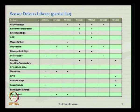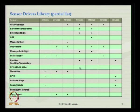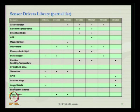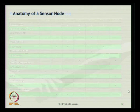Looking at the sensor driver libraries, a partial list is shown for different configurations of the mote, as MTS 101, 300, and 310, as available in the market from Crossbow USA. Most of these models have accelerometers built in, barometric pressure and temperature sensors, broadband light sensors, GPS receivers, magnetic field indicators, microphones present in almost all models, photo resistors, piezo buzzers, and analog inputs which can be connected to the mote configuration.